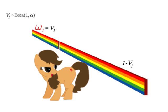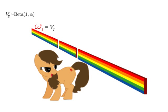At the second iteration, draw a proportion v2 for pony to break off the remaining piece. Set the second weight equal to the length of the second broken piece, which is v2 times 1 minus v1. The remaining portion of the stick is 1 minus v2 times 1 minus v1.